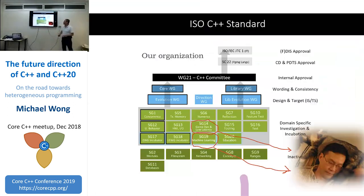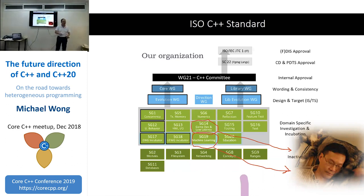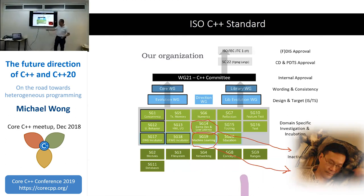The C++ standard committee is getting bigger with more standards. We now have SG19 for machine learning and SG20 for education — specifically to create a curriculum identifying dependencies from one topic to the next. I now chair SG14 and SG19. These groups have external Google groups anyone can join; just search for ISOC SG19 or SG20, or go to isocpp.org and look for forums.